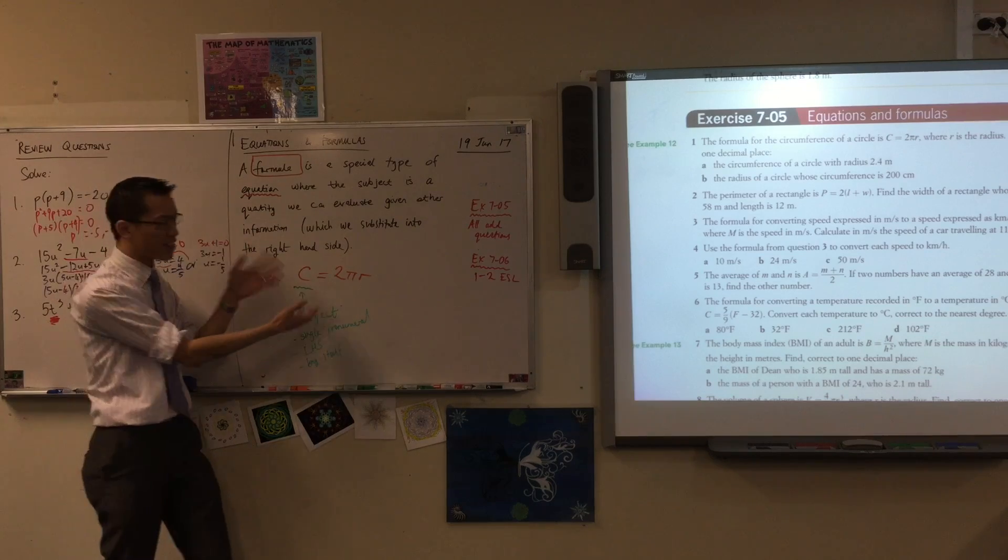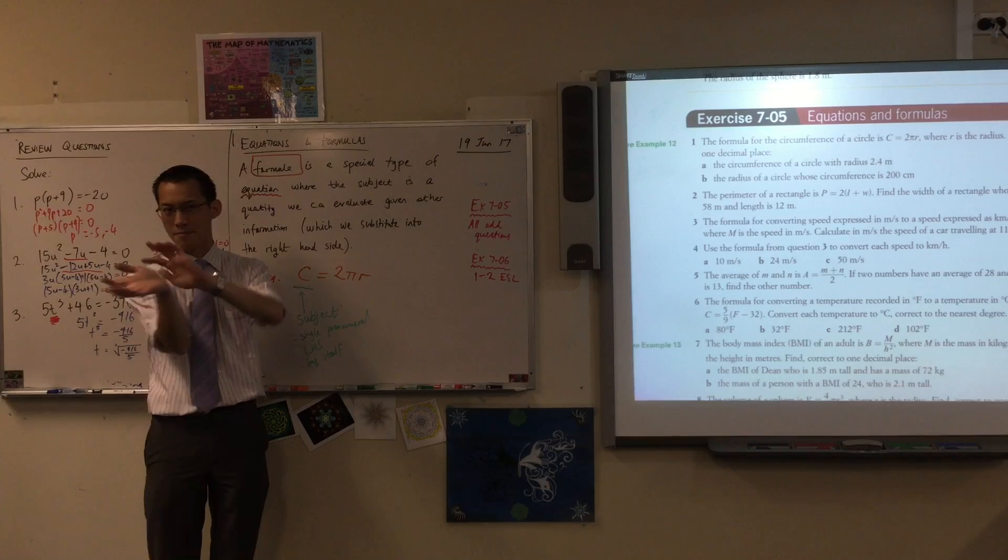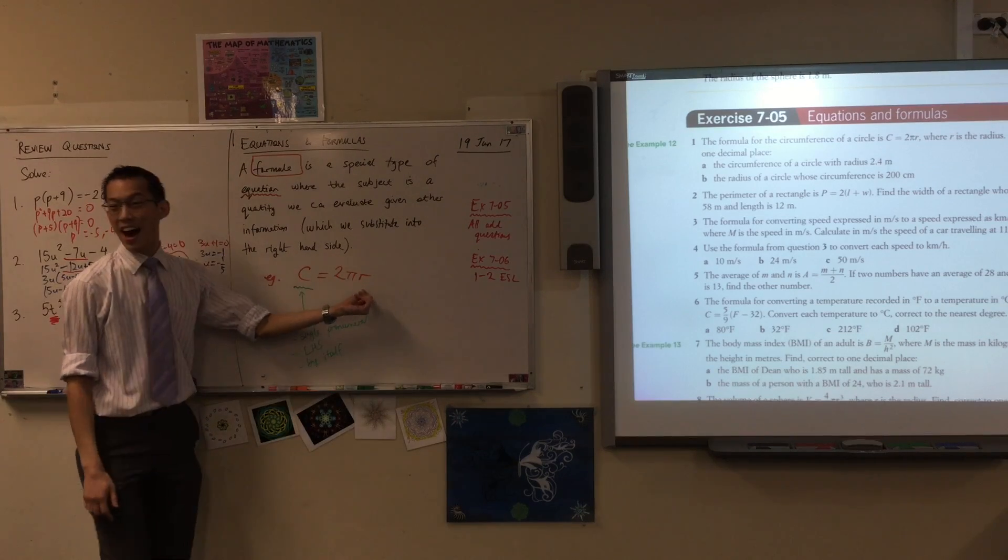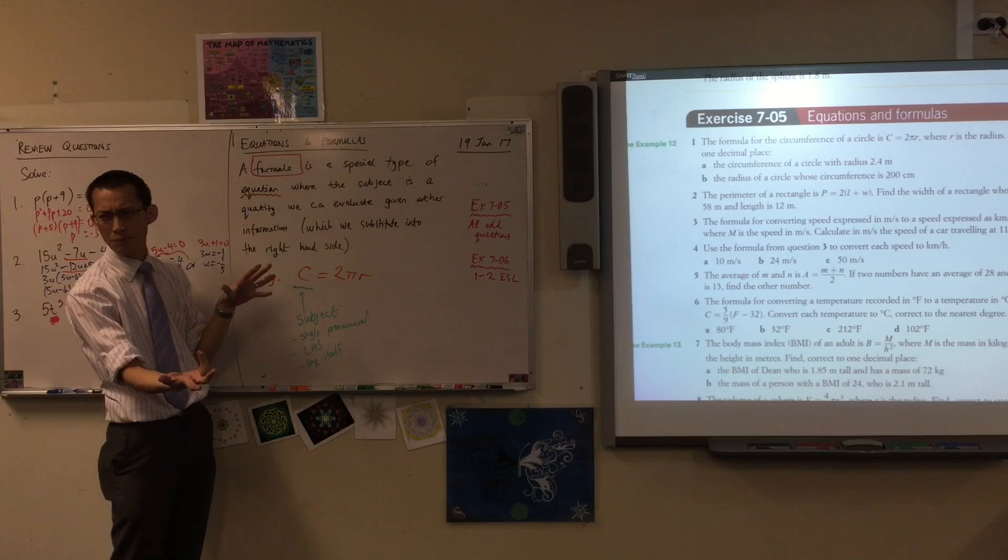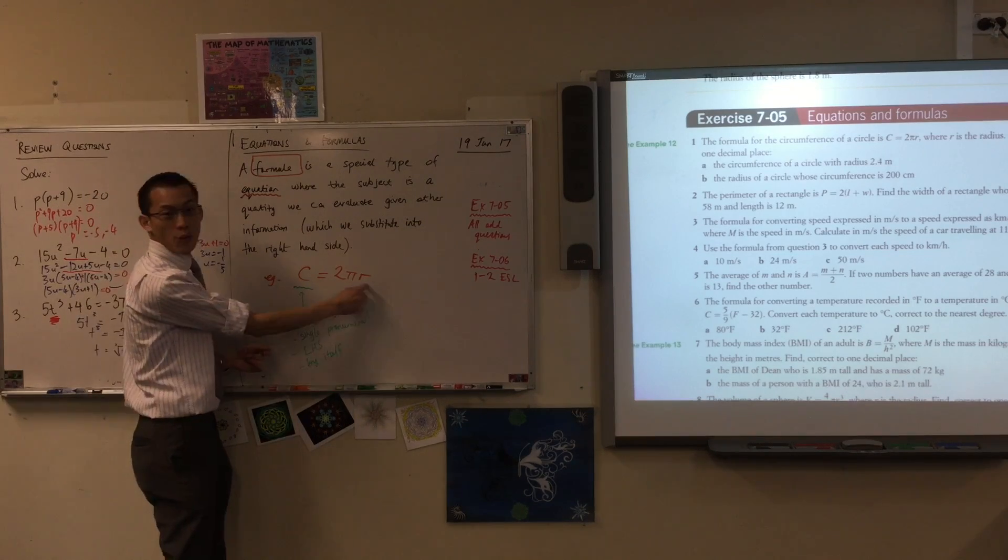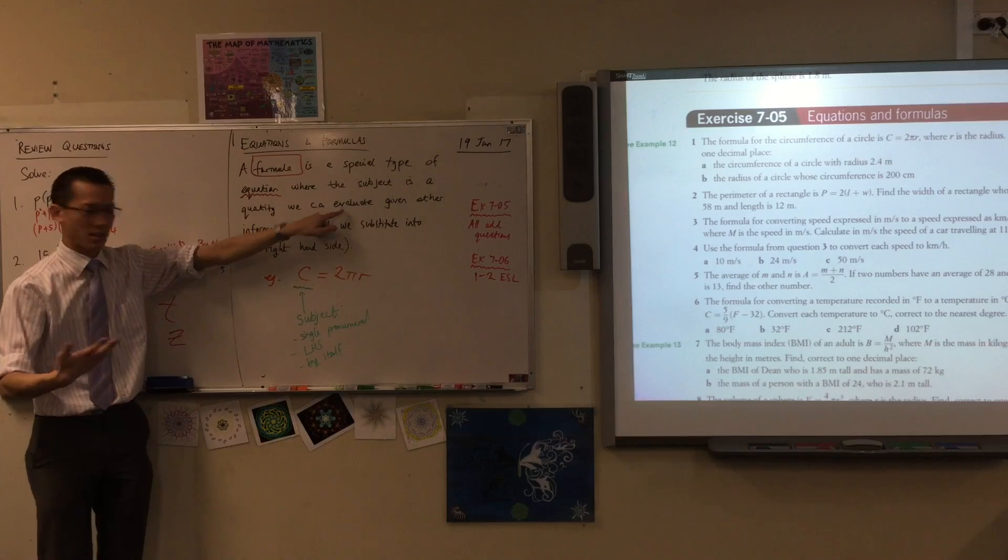Circumference equals—what other information do I need to put into this to get the circumference? Well, pi is a letter, but it's just a number, a number we all could agree on that we all know: 3.1415 and so on. But this r here is a piece of information I'm going to need to measure. What does r stand for? The radius.